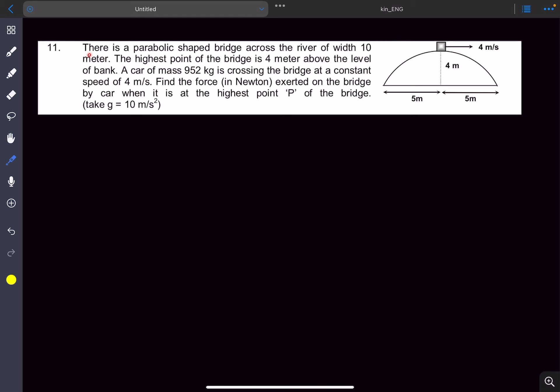Hello everyone, in this video we'll be solving this problem that came in an AITS question from circular motion. We have been given a parabolic shaped bridge across the river of width 10 meters.